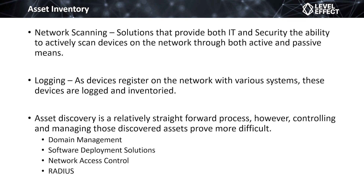To identify assets on the network, there are a few common methods. The first is network scanning — either a paid or free tool used to actively scan. Active scanning means sending data out on the network to get another system to respond. If I reach out and say 'is anyone on this network?' and they respond, I've identified an asset. The way a device responds — the data it provides — helps identify the device type: Windows, Mac, or Linux machines each have subtle differences in their responses, allowing us to build an asset inventory through active scanning.